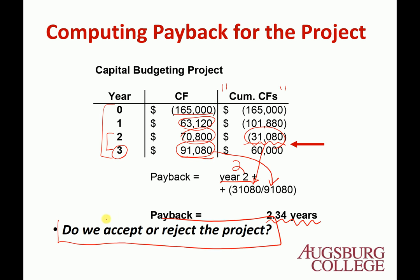The important question is: do we accept or reject this project? The problem with the payback period is that you don't have a pre-set limit given to you. You have to set it first. If you believe you need to get everything back in two years, then 2.34 years is too long and you reject. If you believe three years is acceptable, then you accept. This is not a scientific decision.